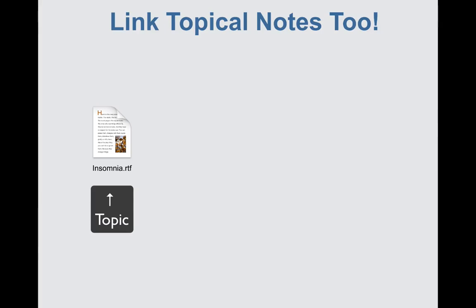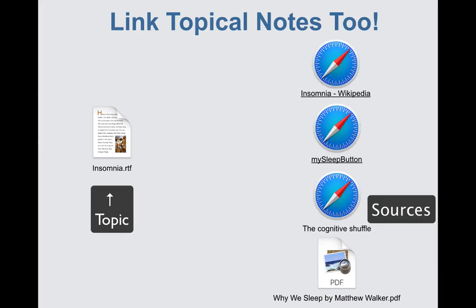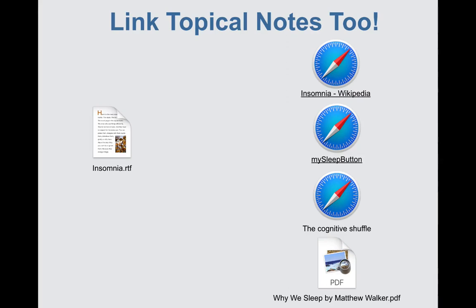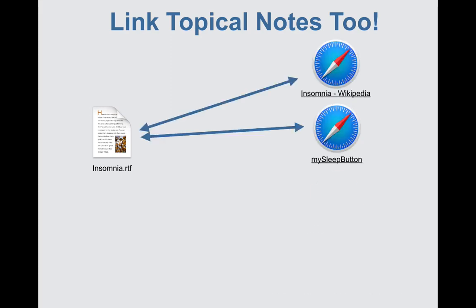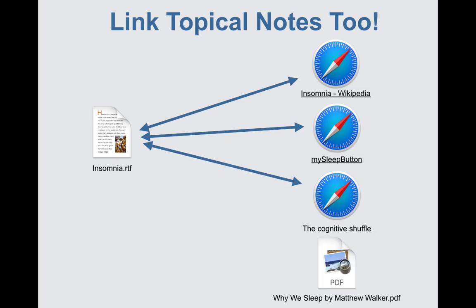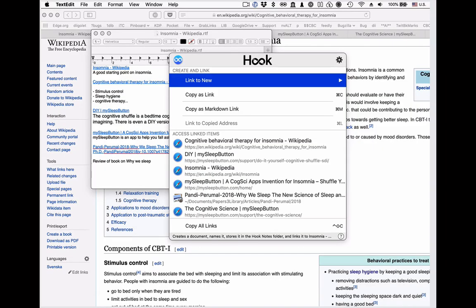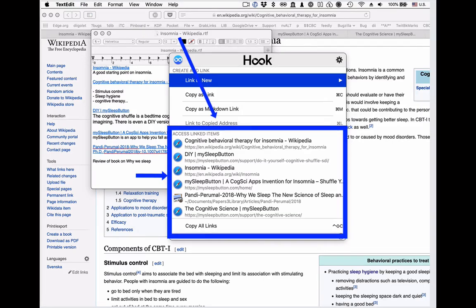Sometimes you want to take notes not about a specific document, but about a topic that has multiple sources. Hook enables you to do this very quickly too. Basically, Hook lets you link any file to any other file, web page, email, and more. For example, if you need to quickly learn about insomnia, you can create a note about insomnia, and as you discover useful web pages and download great PDFs on the topic, you can link them to your topical note. In this case, I've linked the current TextEdit document to a bunch of web pages, which you see listed here in the Hook window, so that you can immediately access any of these linked documents.